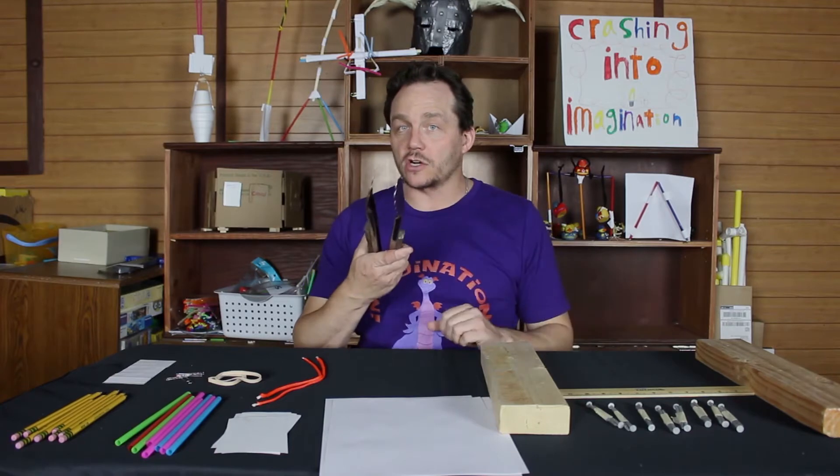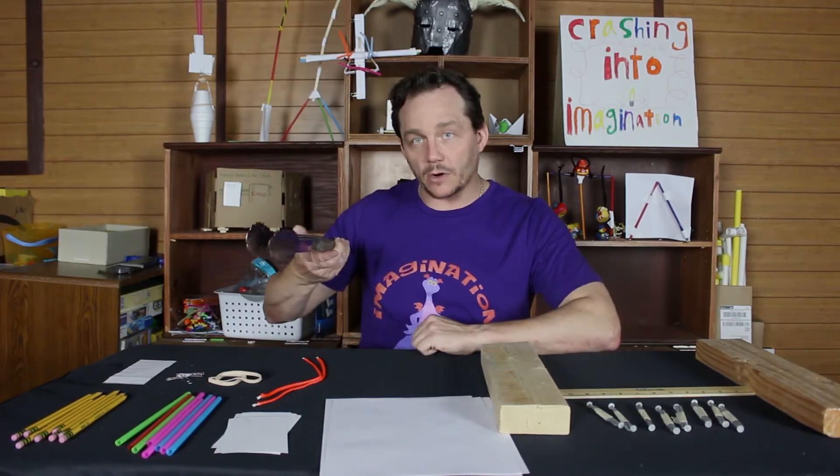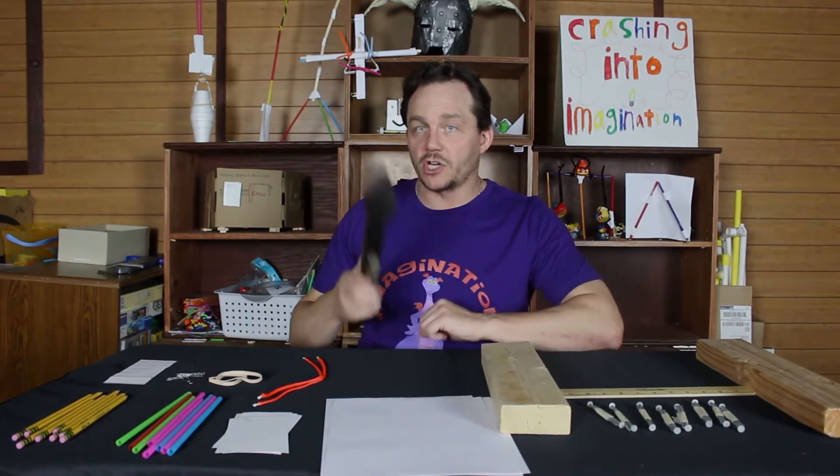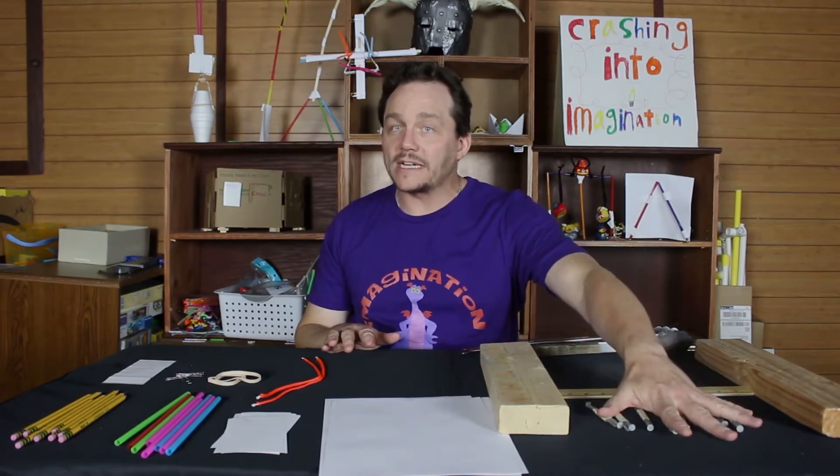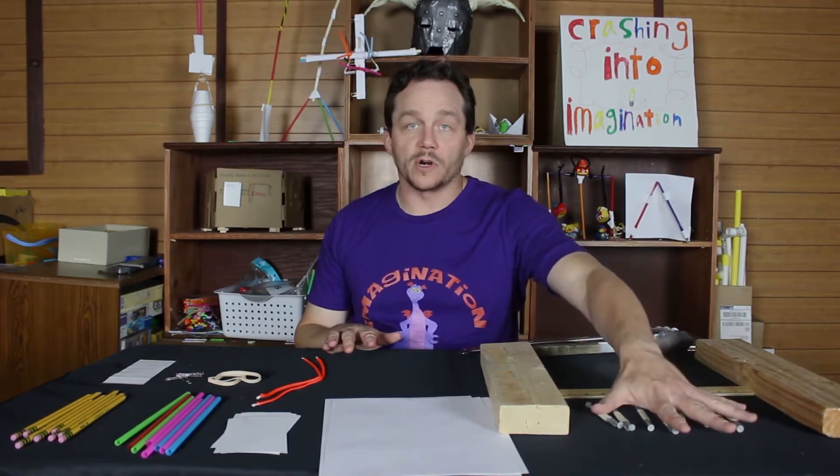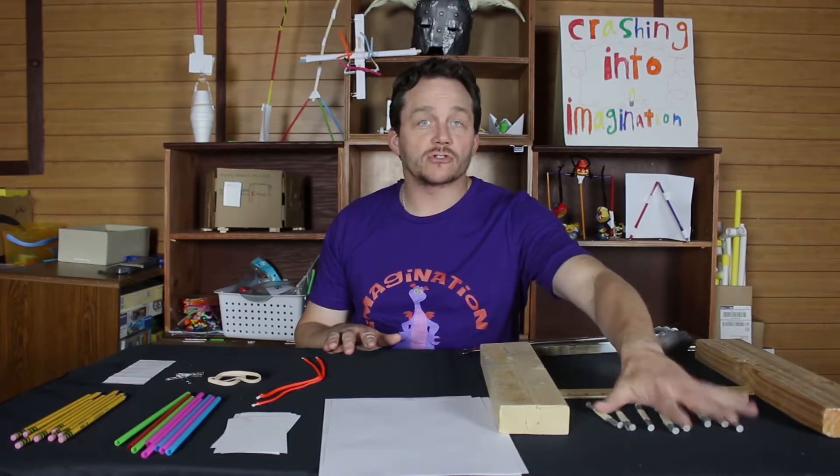We also have a set of tongs which will be used to pick up the tower and make it into a bridge. They cannot be part of the structure. We also have the weights that the bridge will support. Those cannot be part of the structure either.